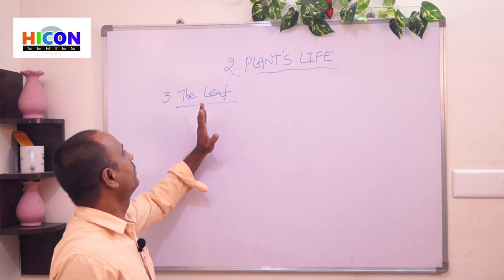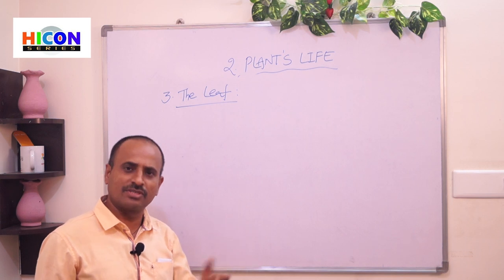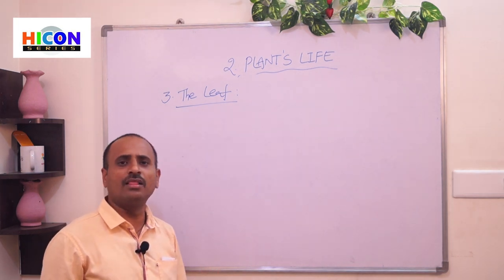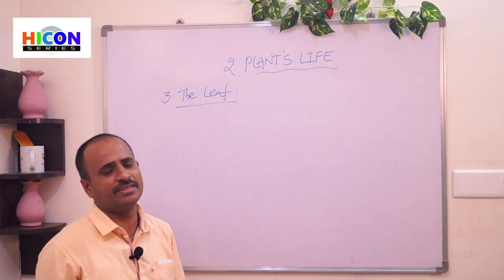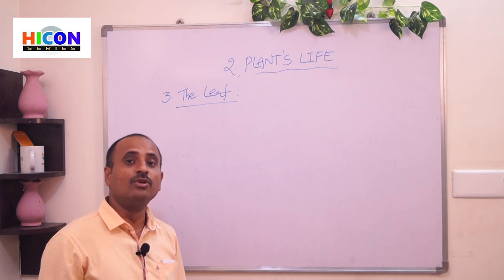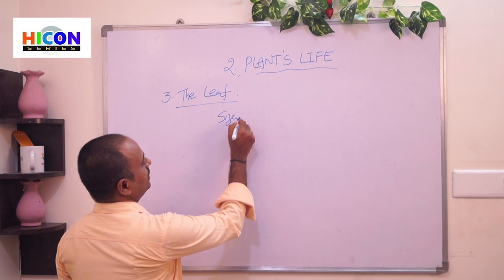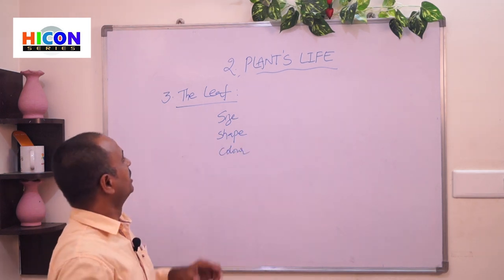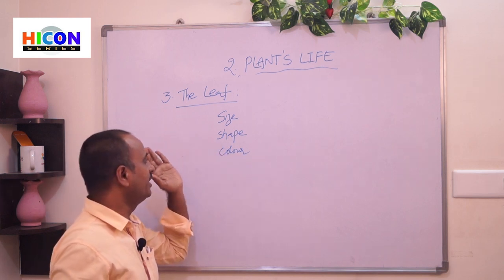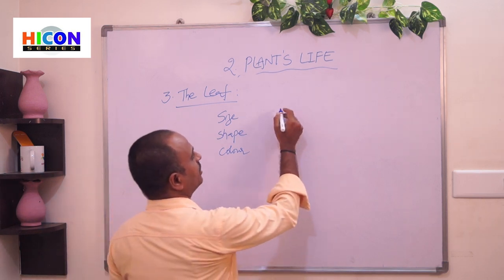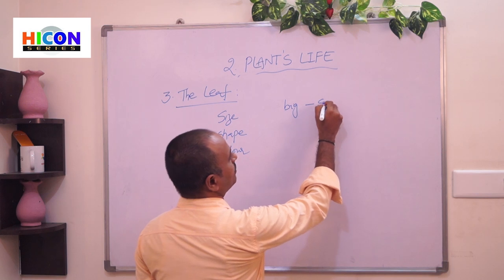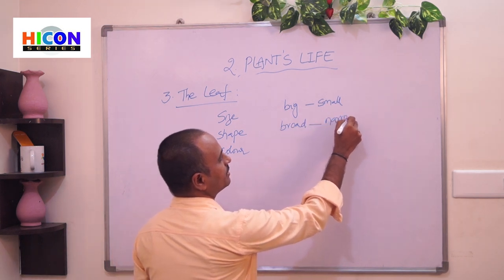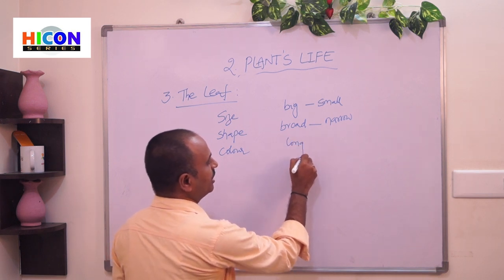The third important part of the plant is the leaf. Different plants have different types of leaves — they are different in size, shape, color, and texture. Some leaves are big and some are small. Some leaves are broad and some are narrow. Some leaves are long and some are short.